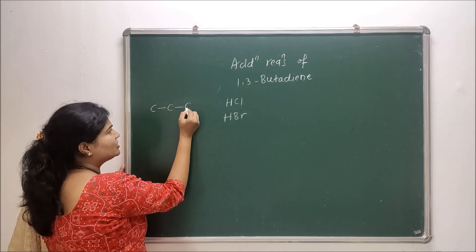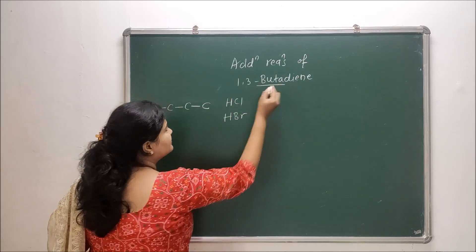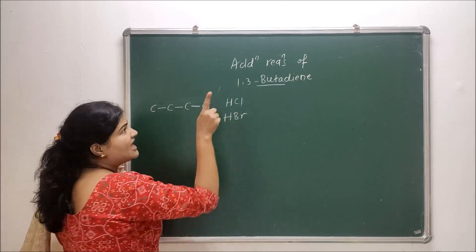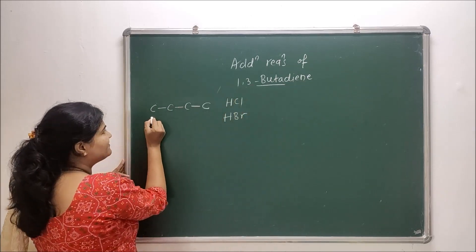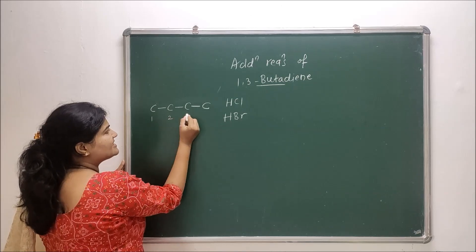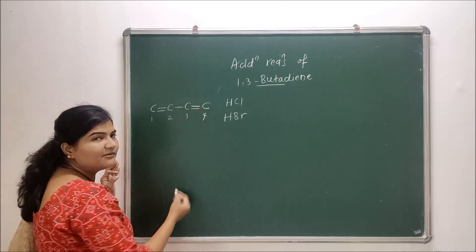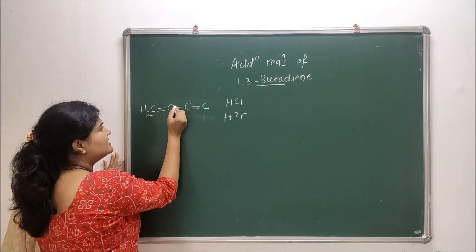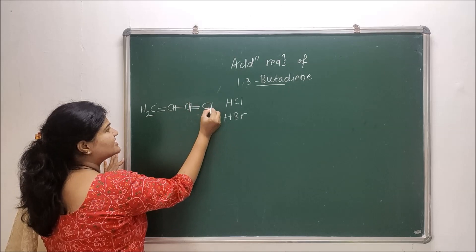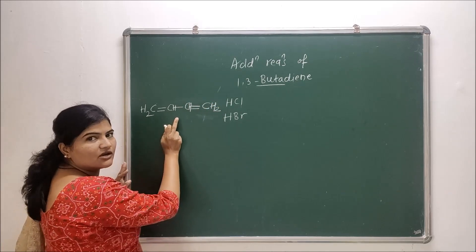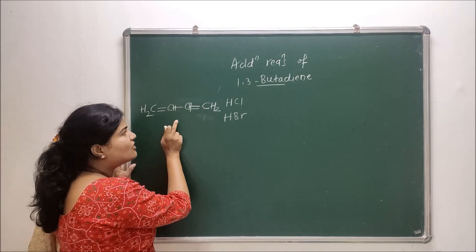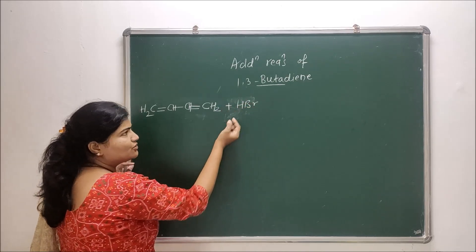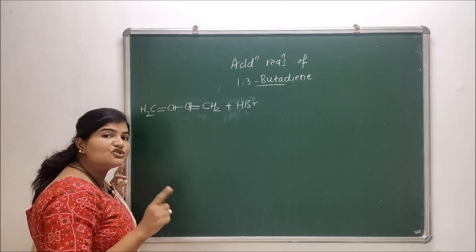The structure of 1,3-butadiene: 'buta' means four carbons, 'diene' means there will be two double bonds, at the first and third carbon. So this is carbon one, two, three, and four, with double bonds at positions one and three. With hydrogens added: CH₂=CH-CH=CH₂. This is my 1,3-butadiene.